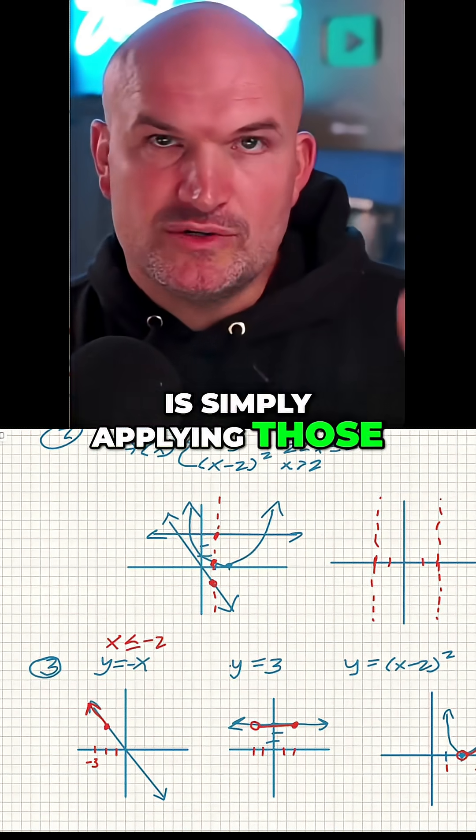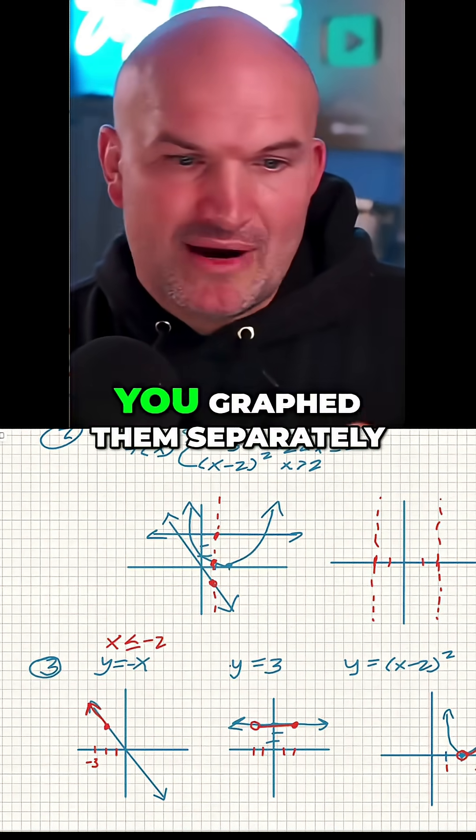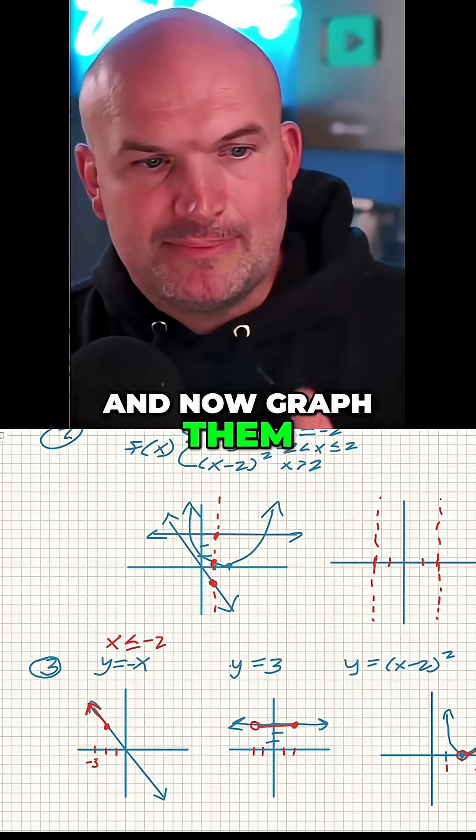So tip number three is simply applying those restrictions and now just graphing. You graph them separately with the restrictions.